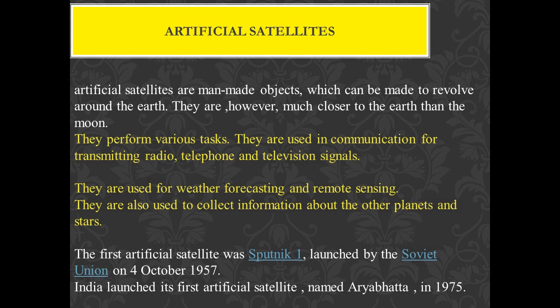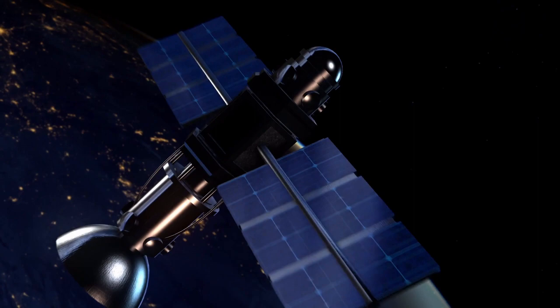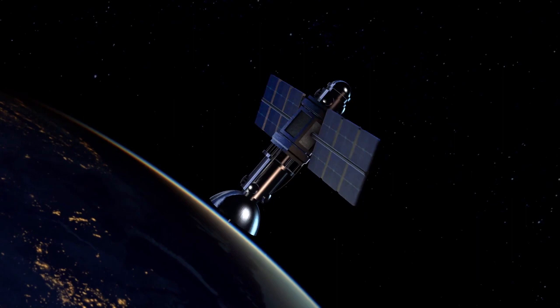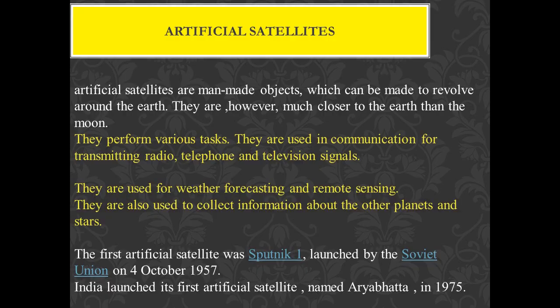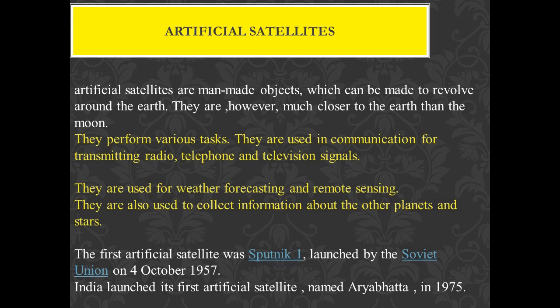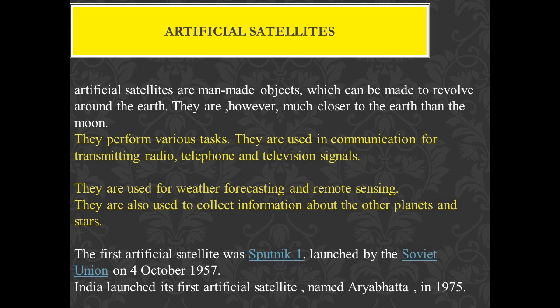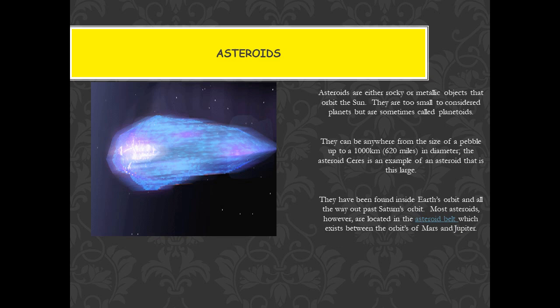Next are artificial satellites — man-made satellites that we have sent to orbit our planet. These satellites help with our communication, transmission, radio, telephone signals, and television signals. The world's first satellite was Sputnik, launched by the Soviet Union on 4th October 1957. India's first satellite was Aryabhata, which was launched in 1975.